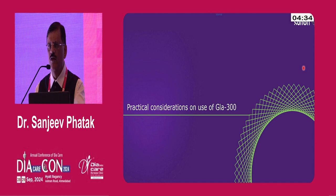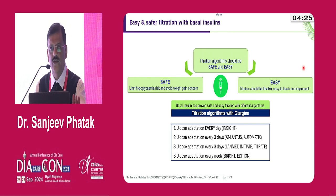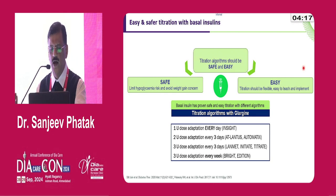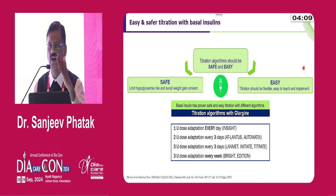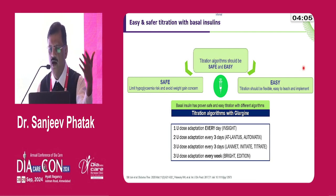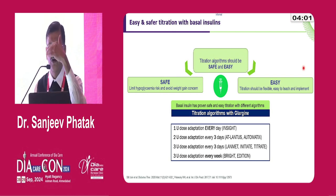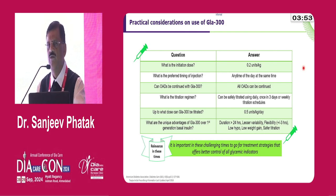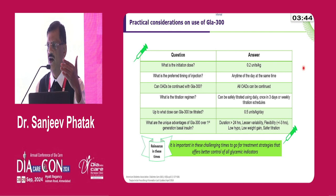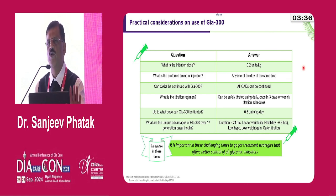Turning to practical considerations for use of glargine U300: it is easy and safer to titrate basal insulin. You can up-titrate by one unit every day as per the INSIDE study basis, or two units every three days — generally we up-titrate by two or four units every three days, not the aggressive eight-unit titration sometimes described. The initial dose is usually 10 units, but one can start with 0.2 units per kg — so for a typical 70 kg person, start with around 14 units.